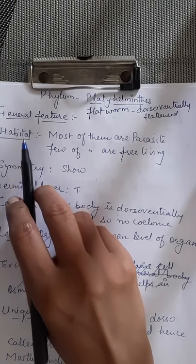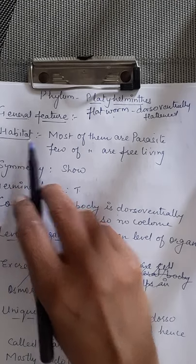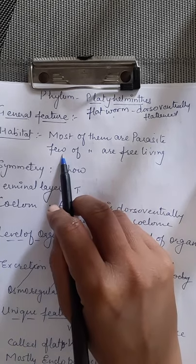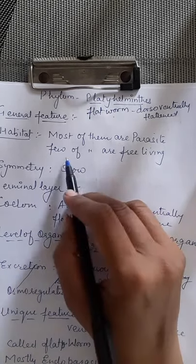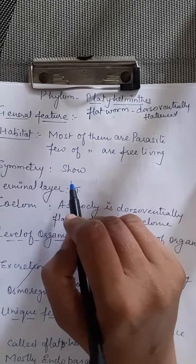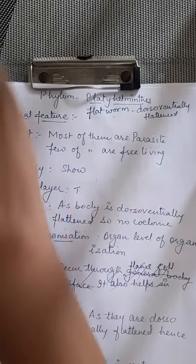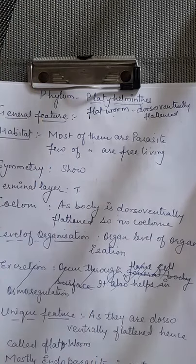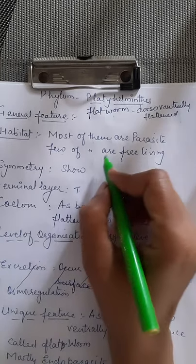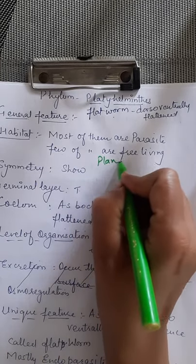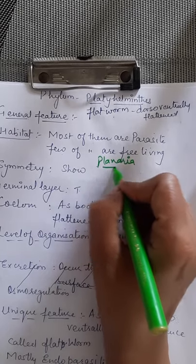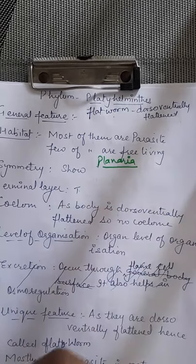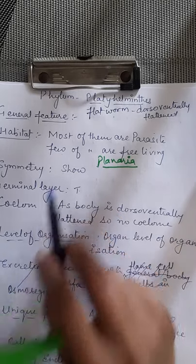What is the habitat — the place where they live? Most of them are parasites. Only a very few of them are free-living. An example of Platyhelminthes is Planaria. You had studied Planaria in the 10th standard also.